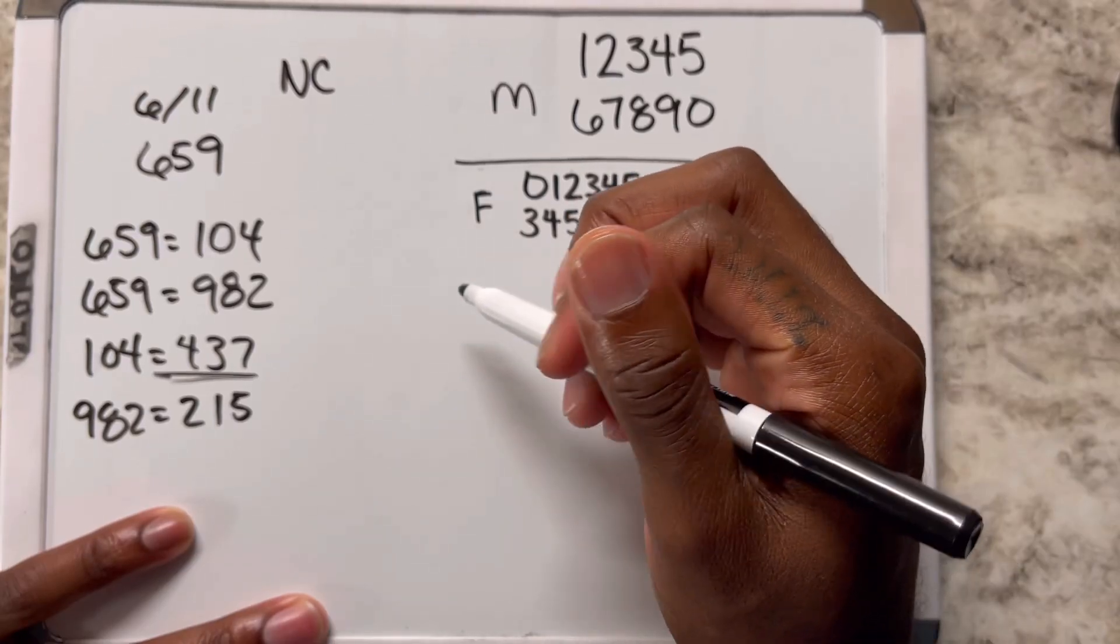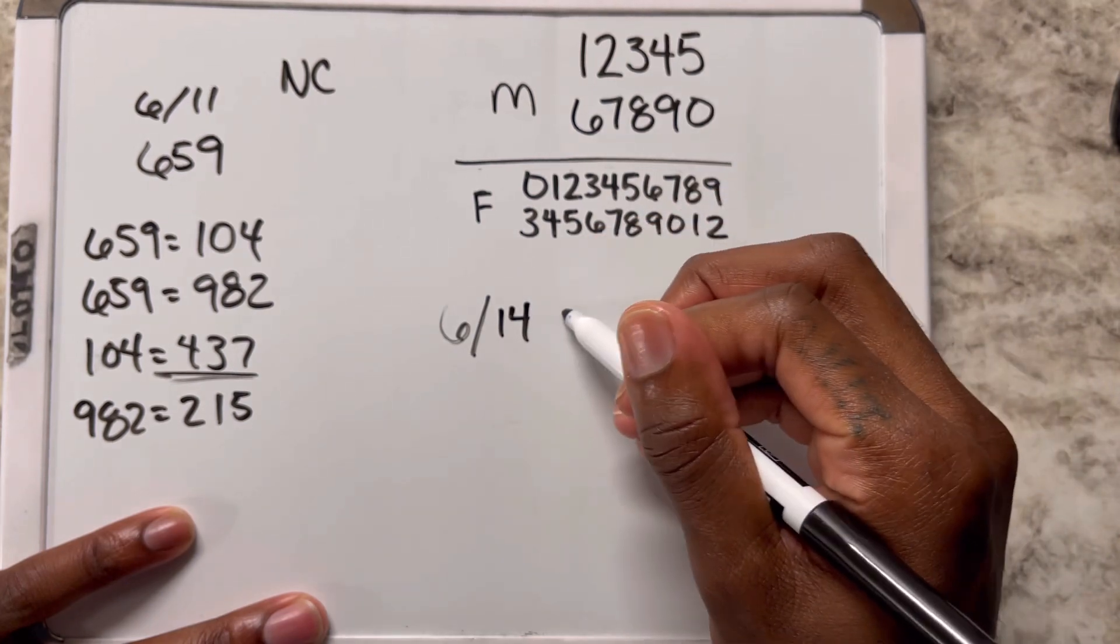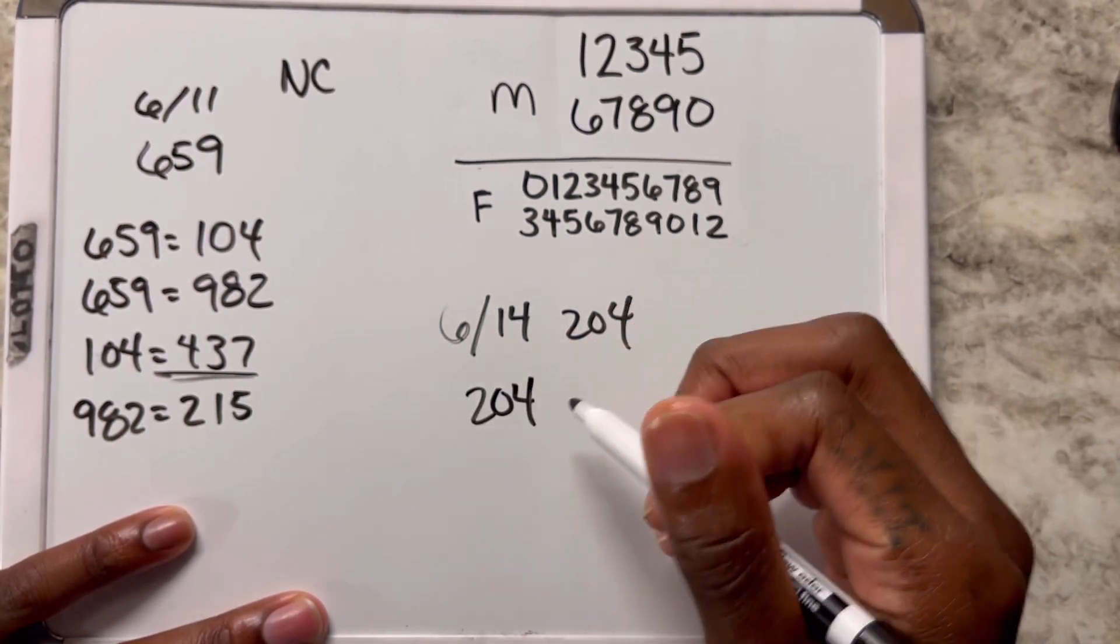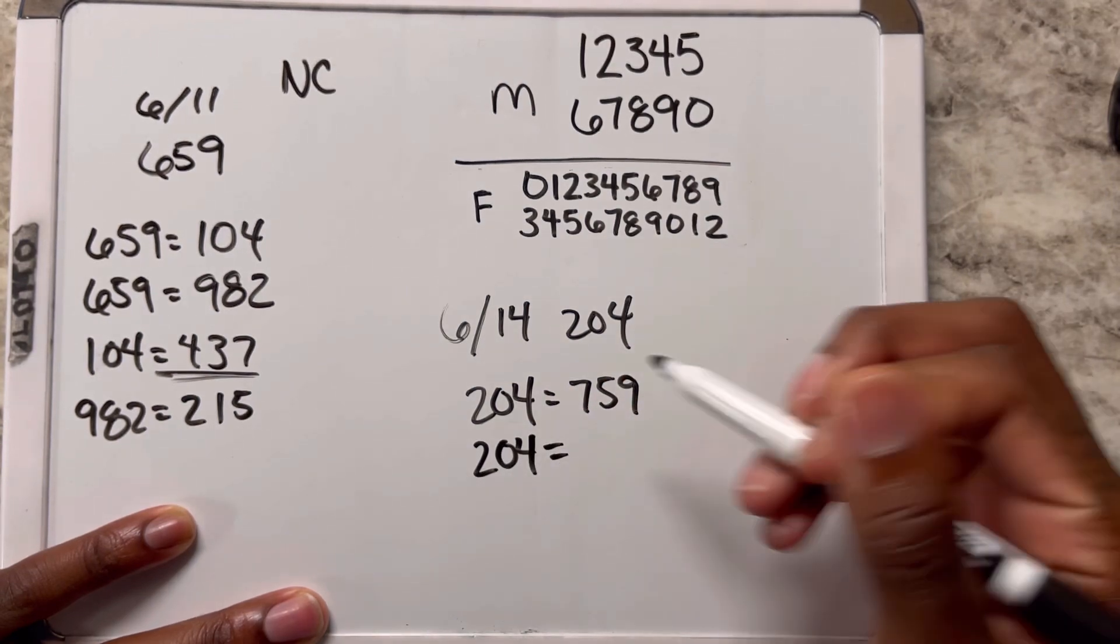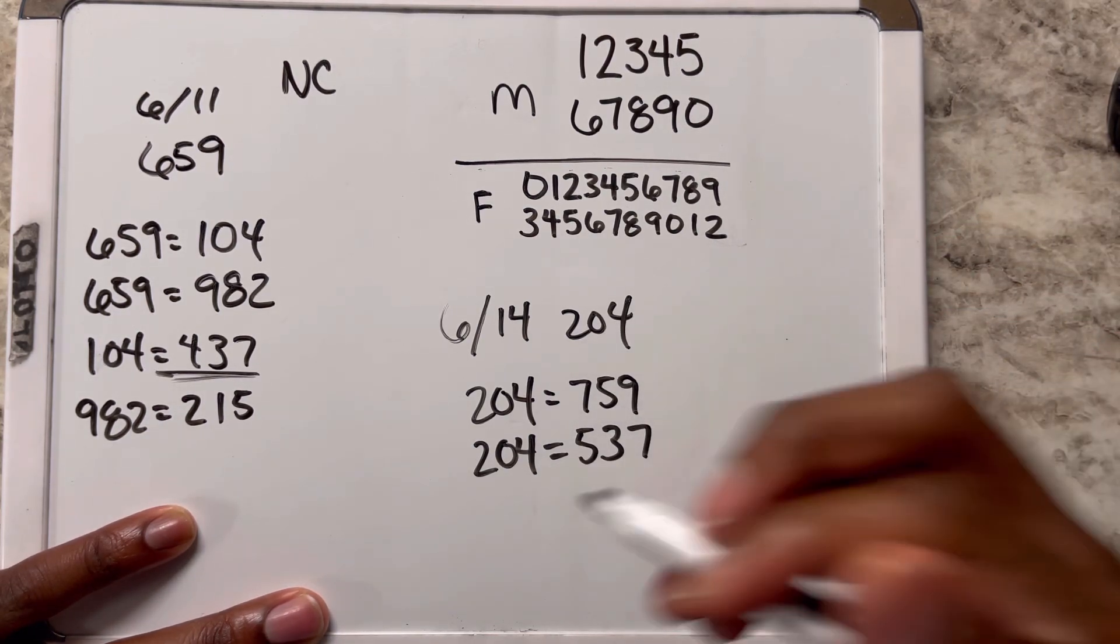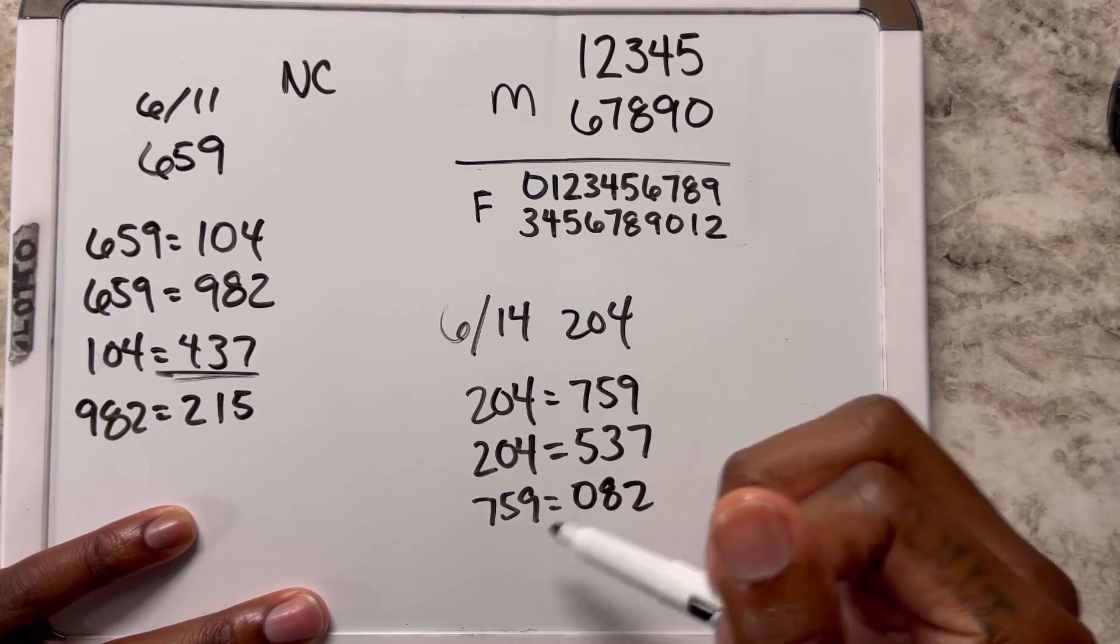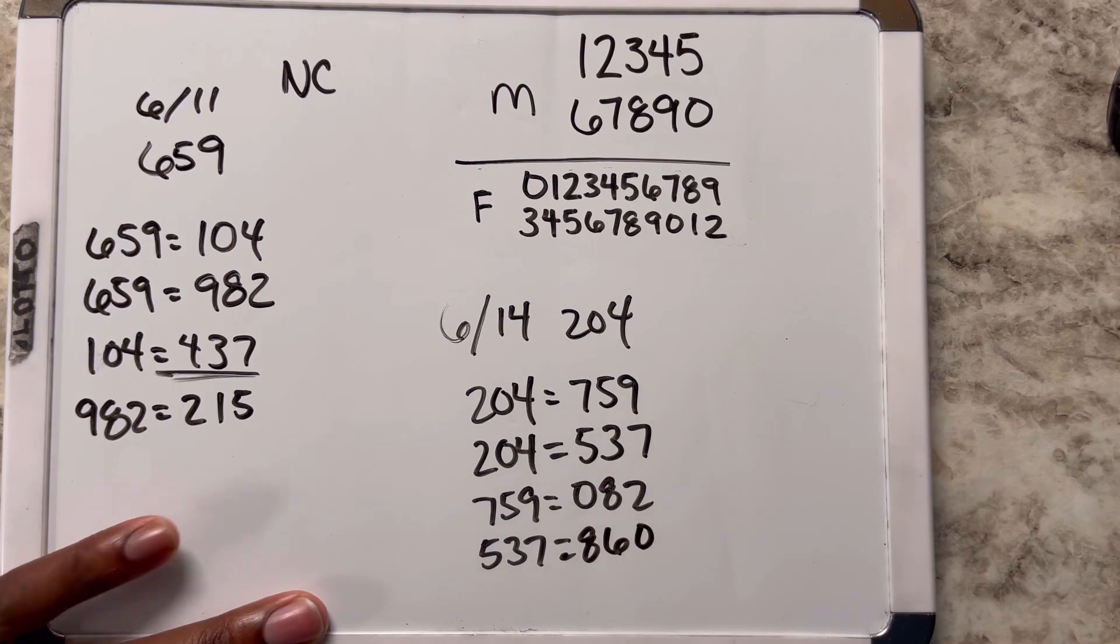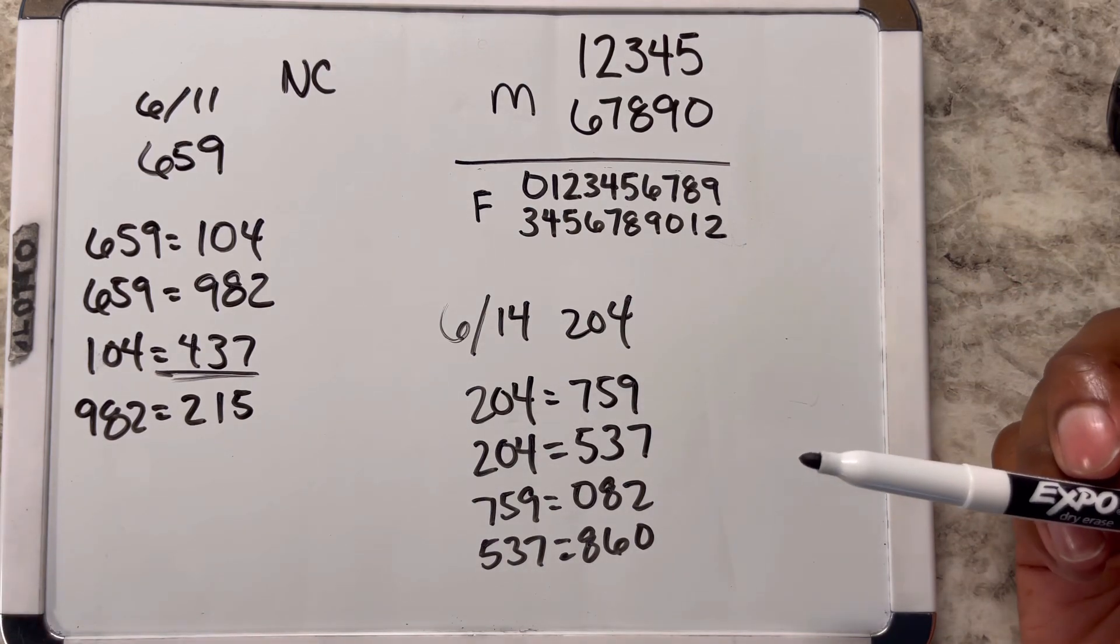Let's go with the number that came out yesterday, which is 204. On 6/14, the number was 204. These numbers you can play for the next couple days. Convert this 204 into the mirror number, 759, and then convert it into the flip number, which is 537. Then we're gonna convert 759 and 537 into flip numbers. 759 goes to 082, and 537 goes to 860.